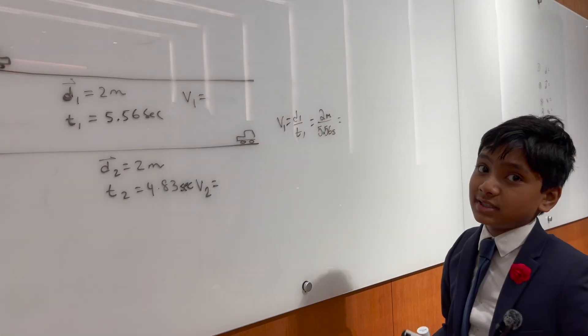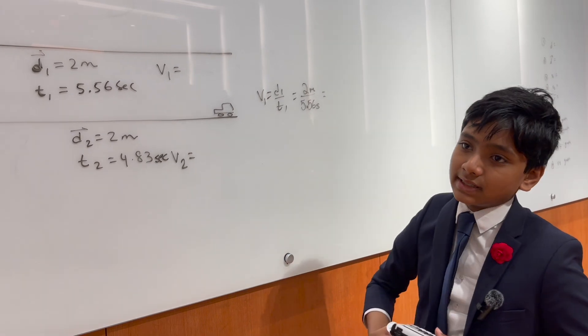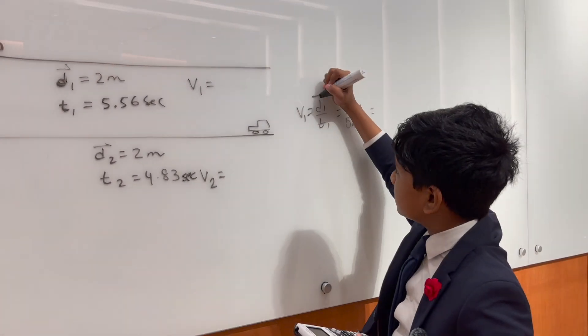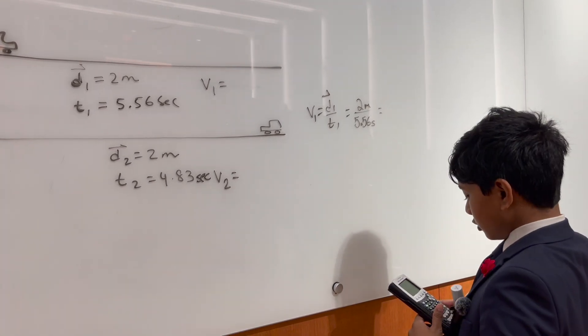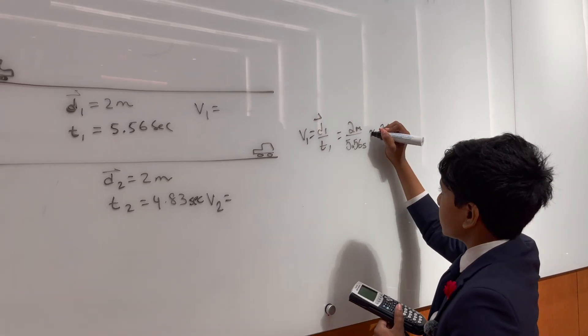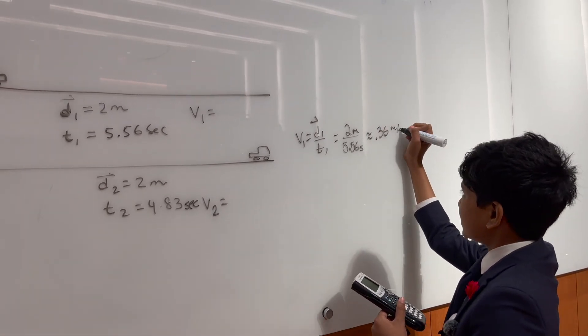Well, technically since we're traveling in a straight line, displacement is the same as distance, but it's okay. Let's do it this way. Okay. So 2 over 5.56 is 0.36, well, approximately 0.36 meters per second.